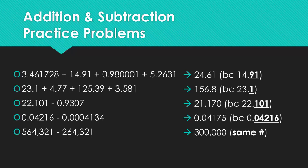So when you look at these answers, you'll notice in the very first problem, you should only have 24.61 because of the fact that the number 14.91 only has 2 decimals. In the second problem, you should get 156.8. The reason why there's only 1 decimal is because the original 23.1 has only 1 decimal.